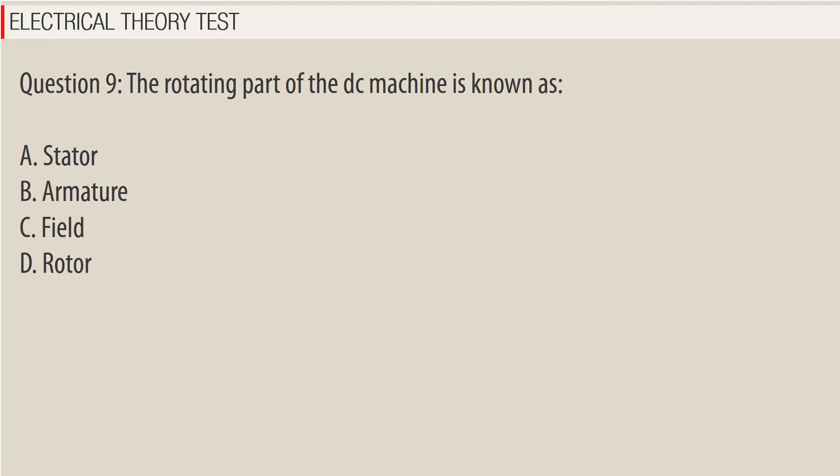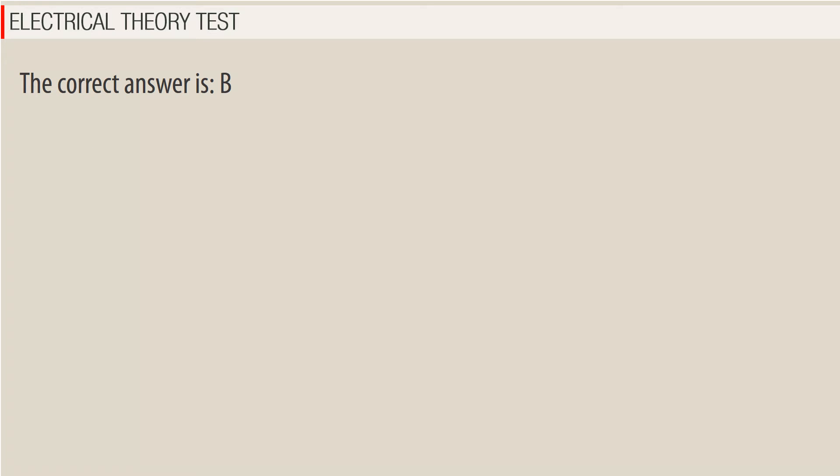Question 9: The rotating part of the DC machine is known as — A. Stator, B. Armature, C. Field, D. Rotor. The correct answer is B.